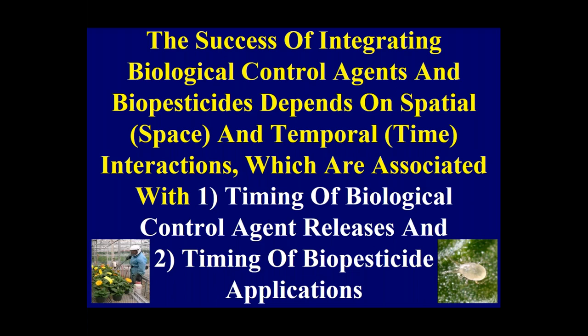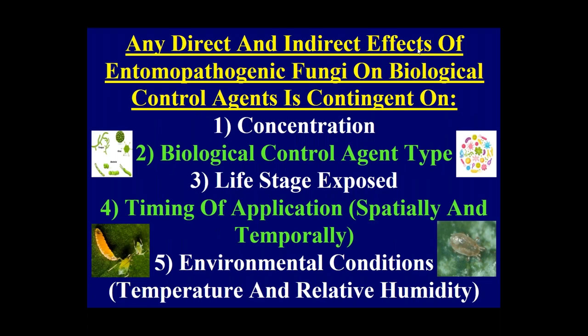The success of integrating biological control agents with biopesticides depends on spatial and temporal interactions — specifically timing of biological control agent releases and timing of biopesticide applications. Any direct or indirect effects of entomopathogenic fungi on biological control agents depend on concentration (rate used), biological control agent type, life stage exposed, timing of application, and environmental conditions. Entomopathogenic fungi, like plant pathogenic fungi, rely on temperature and relative humidity for sporulation, survival, and infection.